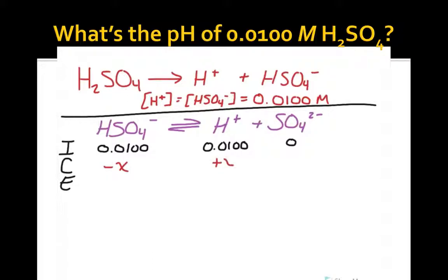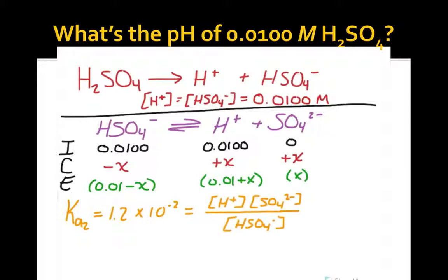We can then use the extent of the reaction. We can write the equilibrium concentrations in terms of x. And we can use the equilibrium expression for the second dissociation step to set up an equation that we can solve for x.